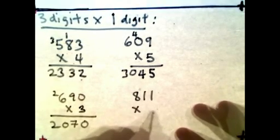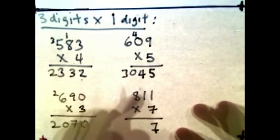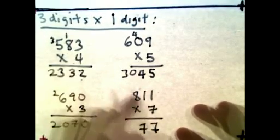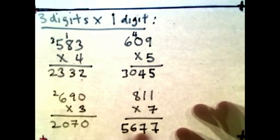Another one. 811 times 7. 1 times 7 is 7. 1 times 7 is 7. 8 times 7 is 56, giving us 5,677.